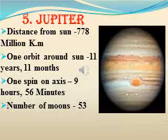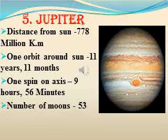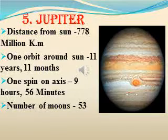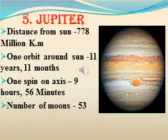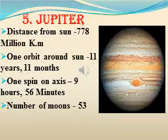The next planet is Jupiter. Jupiter is the largest planet of our Solar System. Its distance from the Sun is 778 million km. One orbit around the Sun is 11 years and 11 months. One spin on axis takes 9 hours and 56 minutes. It has 53 moons.